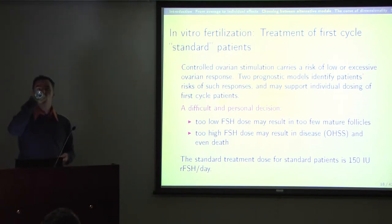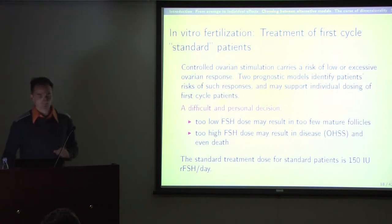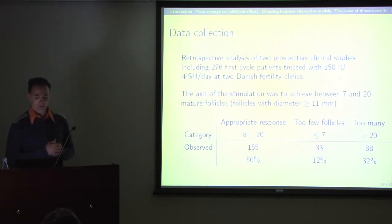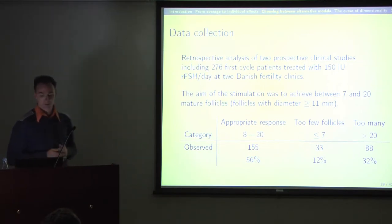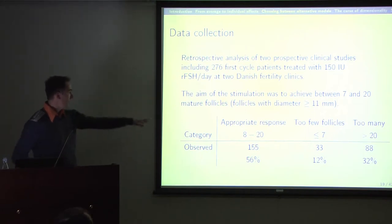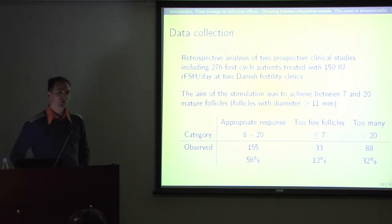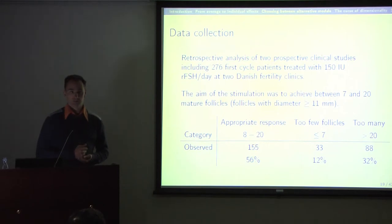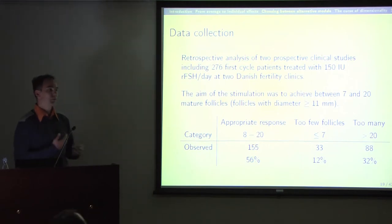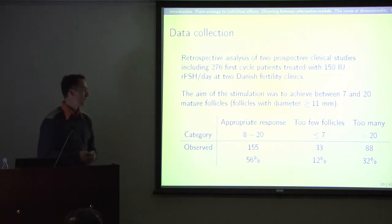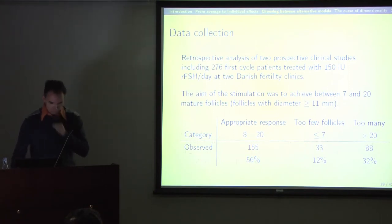The standard dosage is 150 units per day. With 150 units, among 276 patients, many had an appropriate response. But 33 had too few follicles, risking no pregnancy, and 88 had too many follicles. The aim of individualized treatment would be to reduce dosage for the latter group and increase it for the former.